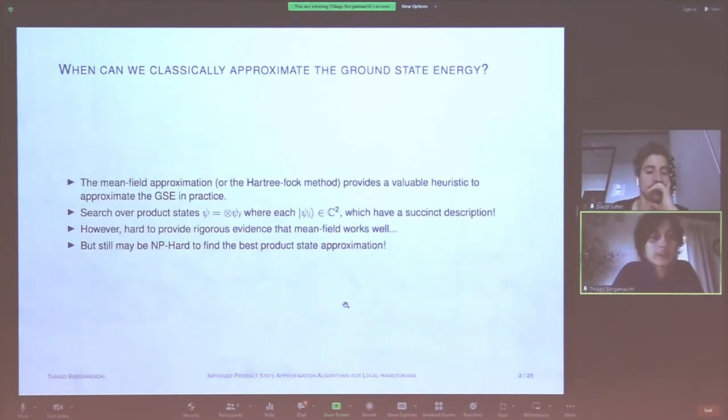And so the question that we're going to try to study in this talk is when we can classically approximate the ground state energy. And so if you were to ask a physicist or a chemist, they'll immediately tell you that the mean field approximation is a valuable heuristic to approximate these systems in practice. And essentially what it amounts to is to search over product states instead of entangled states as your approximation to your ground state. Since these individual vectors have a succinct description, the task is in NP, but it might still be NP-hard to solve. And so on that note, it's hard even to provide rigorous evidence that the mean field method works well.